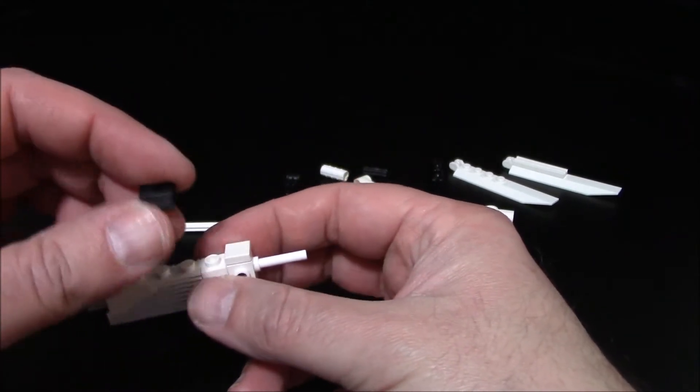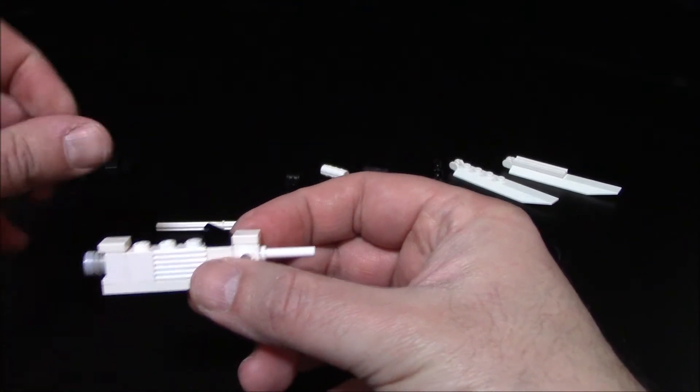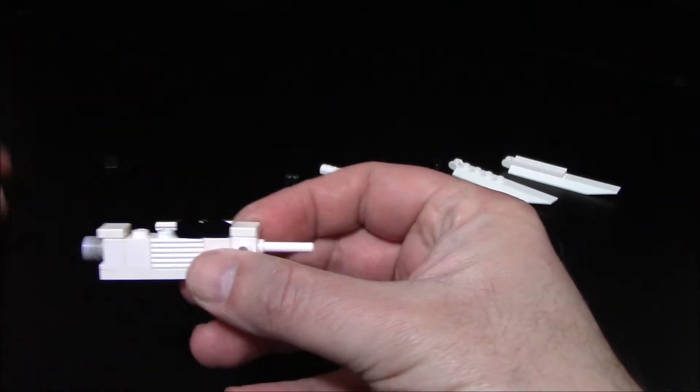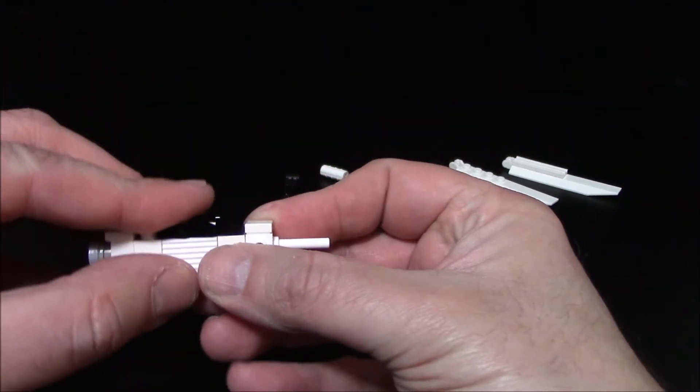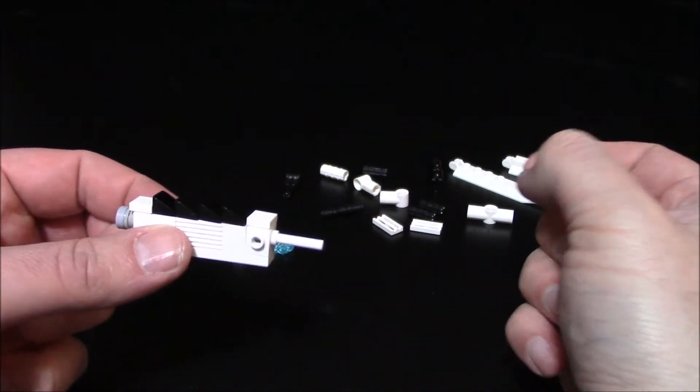We're going to build the handle pieces, so you'll need four of these black cheese slopes. Line them up on the studs there: one, two, three, four. You pretty much have the handle done.